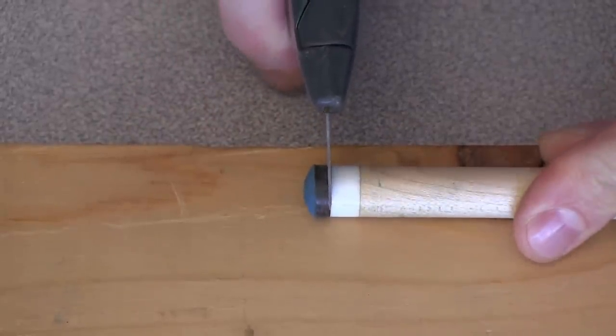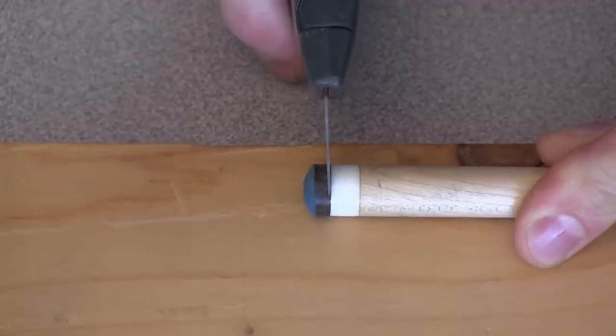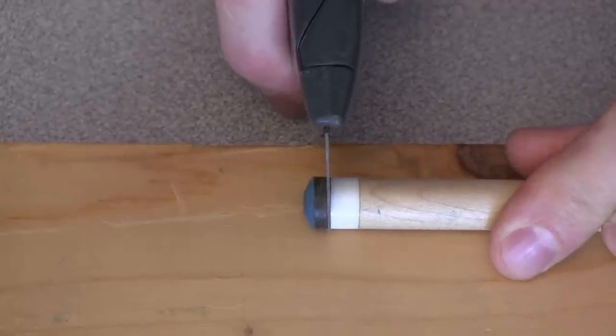You don't want to risk cutting into or damaging the ferrule. Roll the shaft back and forth, and use a sawing motion as you cut to make it a little easier.